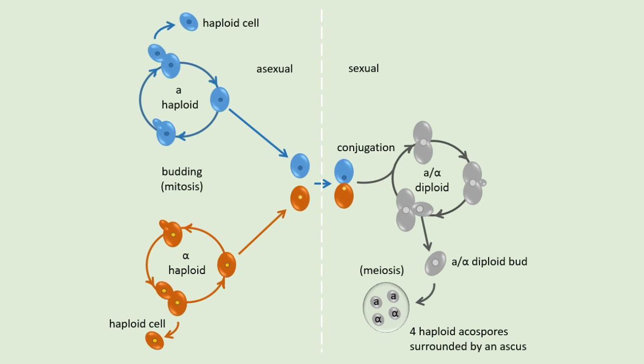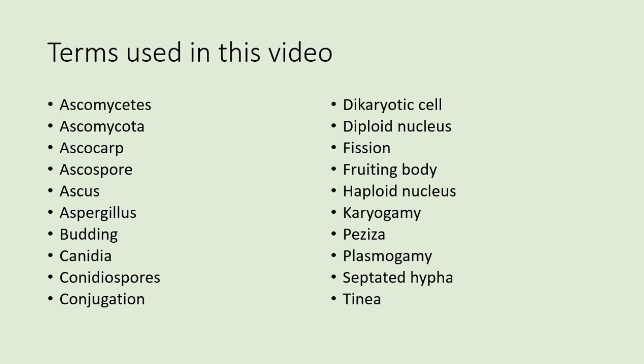What groups this fungus in the phylum Ascomycota is the fact that they make ascospores, and by DNA analysis they're genetically related to Peziza and other members. This wraps up my video on the Ascomycota. I've given some examples of Ascomycetes, mentioned their common characteristics, and presented the life cycles of a multicellular form and a single-cell form. Thank you.